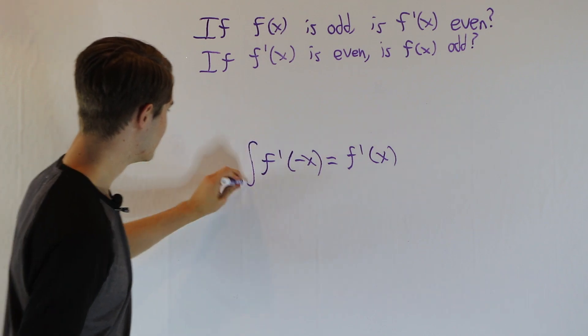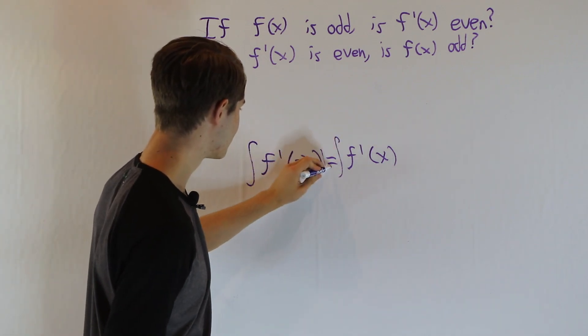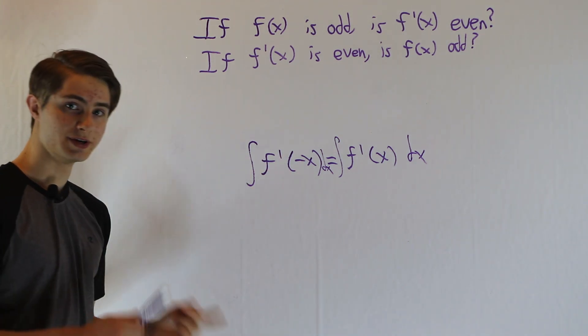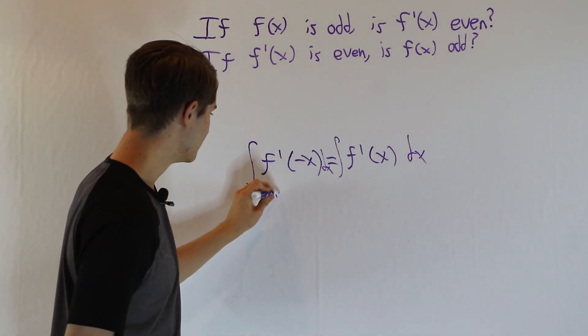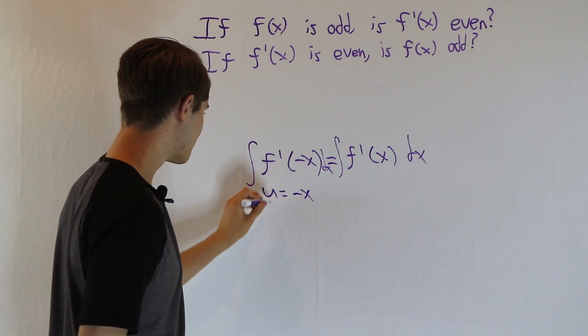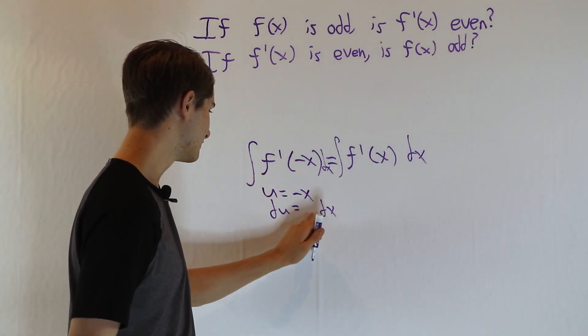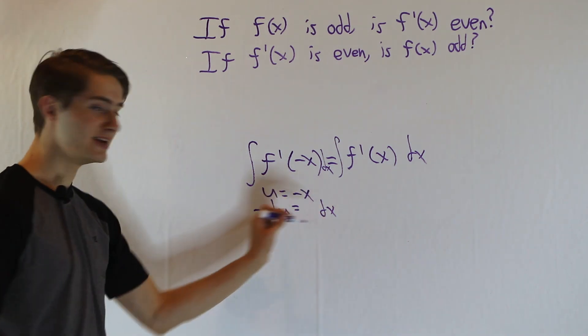So let's try taking the integral here on both sides, our indefinite integral with respect to x. If we look at this first one, we're going to have to do a substitution. So we can do u equals negative x, and then du is negative dx. So dx, if we multiply by negative 1, is then negative du.